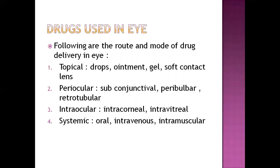Regarding drugs used for eye disorders, the routes of drug administration to the eye are topical, periocular, intraocular, and systemic. Topically, drops, ointment, and gel can be provided. Periocularly, subconjunctival, peribulbar, and retrobulbar drugs can be administered. Intraocularly, intracorneal and intravitreal routes are used. Systemic drugs can be given orally, intravenously, or intramuscularly.